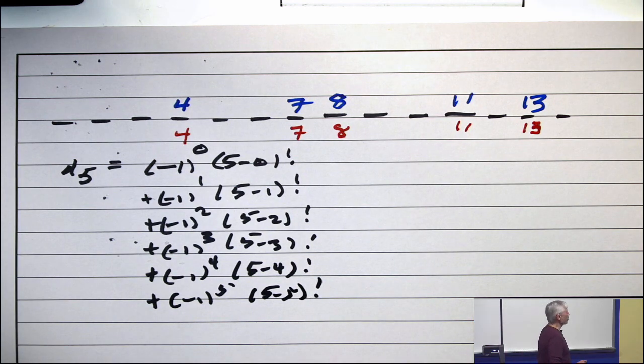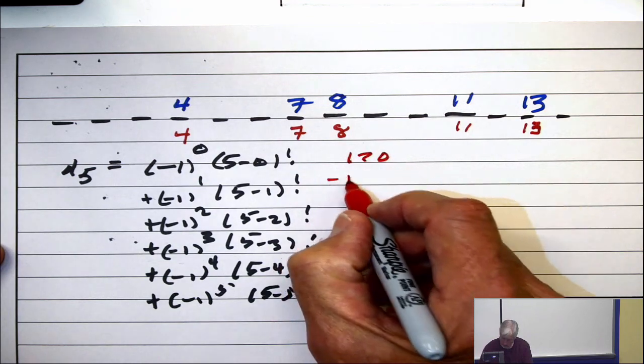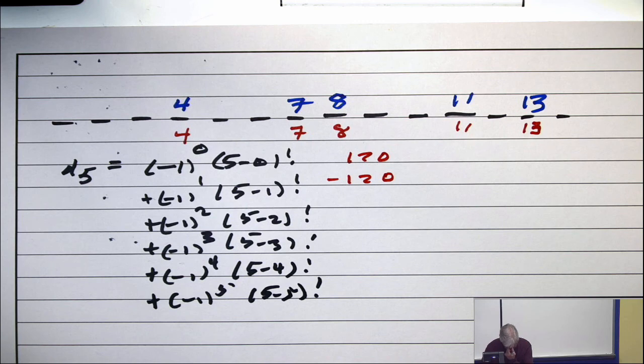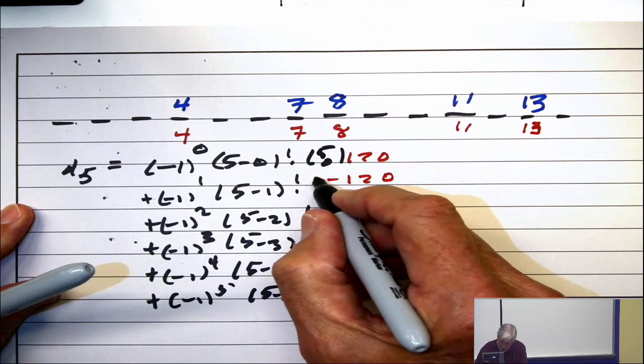Okay, now, you, on your notes, you finish off this calculation and tell me what the answer is. Oops, by the way, this calculation, I left off the binomial coefficients. This has got to have 5 choose 0 in it, this has got to have 5 choose 1, 5 choose 2, 5 choose 3,